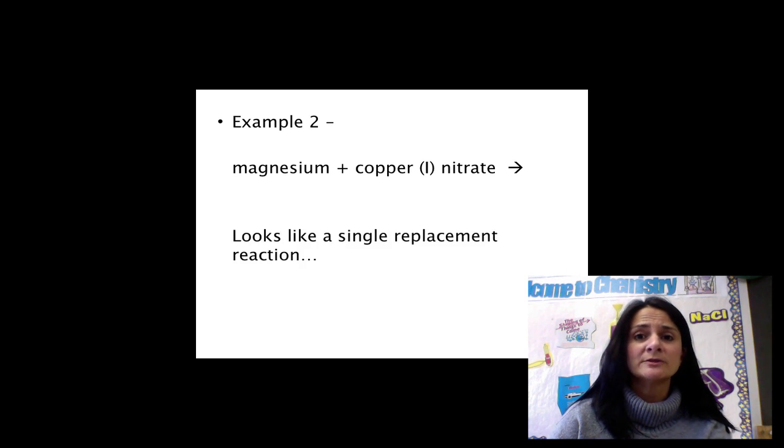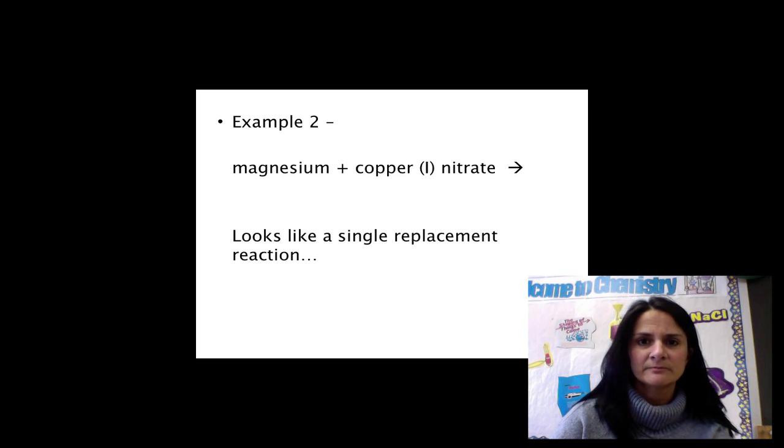Before you write the products for the single replacement reaction, however, you must refer to an activity series. If you recall, in an activity series, any element that is above another element in the activity series will replace that element in a single replacement reaction. In other words, referring to the activity series, magnesium is found above copper. Therefore, magnesium will replace copper.